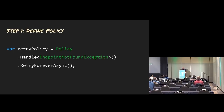Step one: you create a policy object, and you do that with the fluent syntax. You can tell it what exceptions you want to handle specifically, or you can just say exception for everything. This is just a wrapper around try-catch — that's really all it is. It's a wrapper around try-catch with smarts built in and with retry policies.